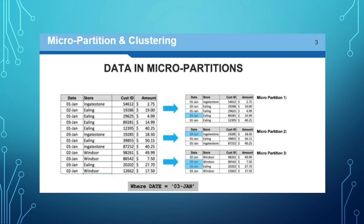In micro partitioning, every partition is 50 MB to 500 MB of uncompressed space. There are many small micro partitions. Data is stored in small tables with small partitions, which makes queries very fast and data manipulation activities fast. Micro partitioning is one of the best features in Snowflake. The partition size of 50 MB to 500 MB is an important interview question for Snowflake.